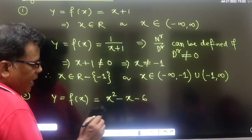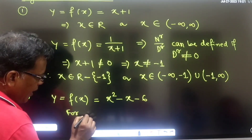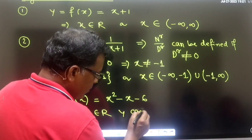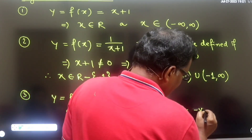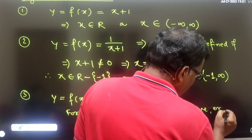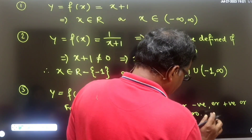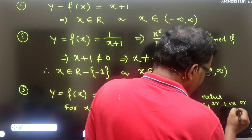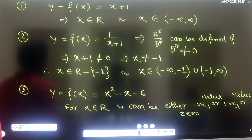So y can be negative, positive, or zero — nothing else. Any positive number as y is defined, any negative number as y is defined. y only must not become infinity. So we can take all real values as domain. This means the domain of a simple quadratic expression (in numerator) is all real numbers.